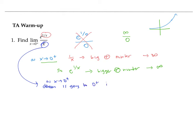On the denominator, as x is going to zero from the positive side, the denominator is going to zero from the positive side. Because it's just x, in other words, it's going through small positive numbers.